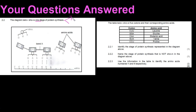Protein synthesis is actually made up of two stages — the first being transcription and the second being translation. A way to remember which one comes first: transcription has a C and translation has an L. C comes before L in the alphabet, so transcription takes place first.